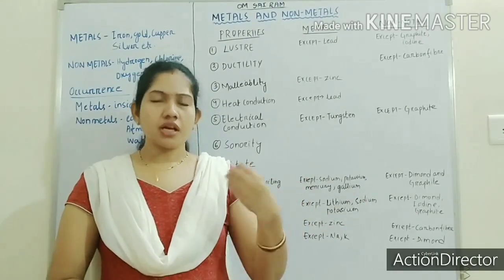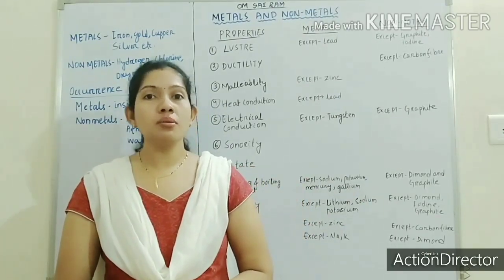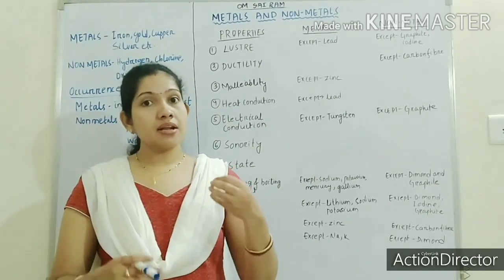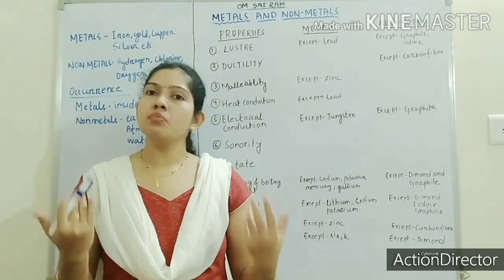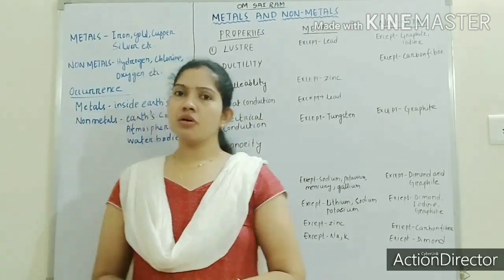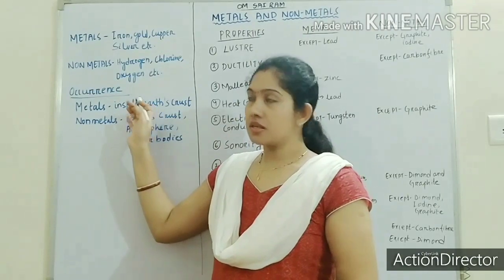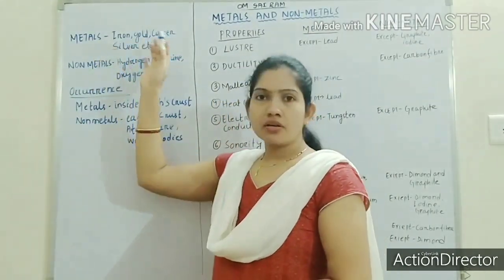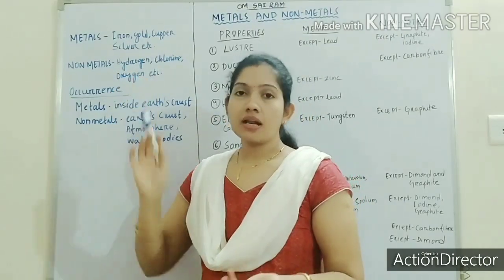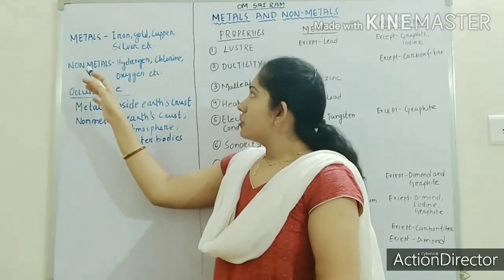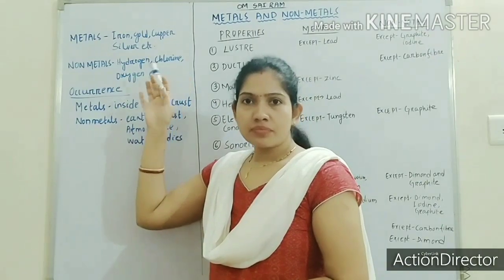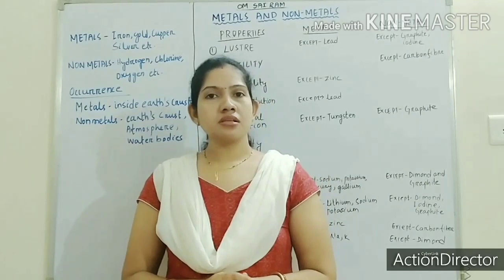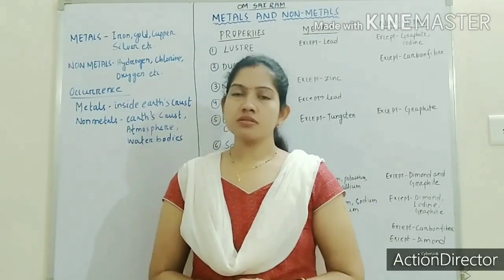If we talk about metals and non-metals, both can differ by their physical and chemical properties. Some examples of metals are iron, gold, and silver. Non-metals include hydrogen and oxygen. There are some more metals and non-metals whose names you should know.